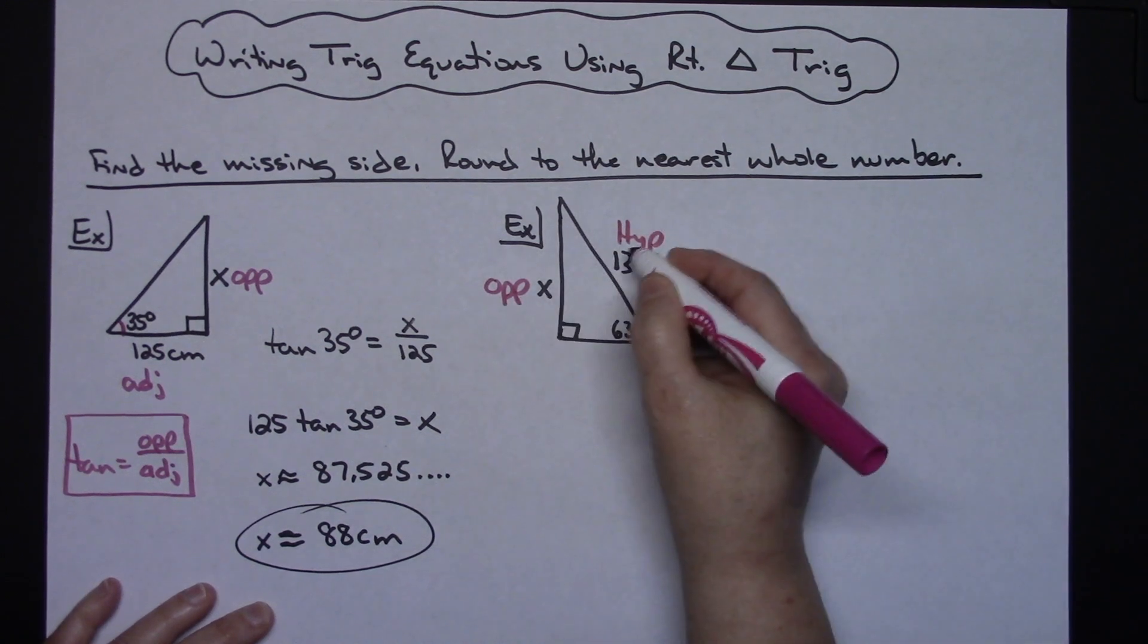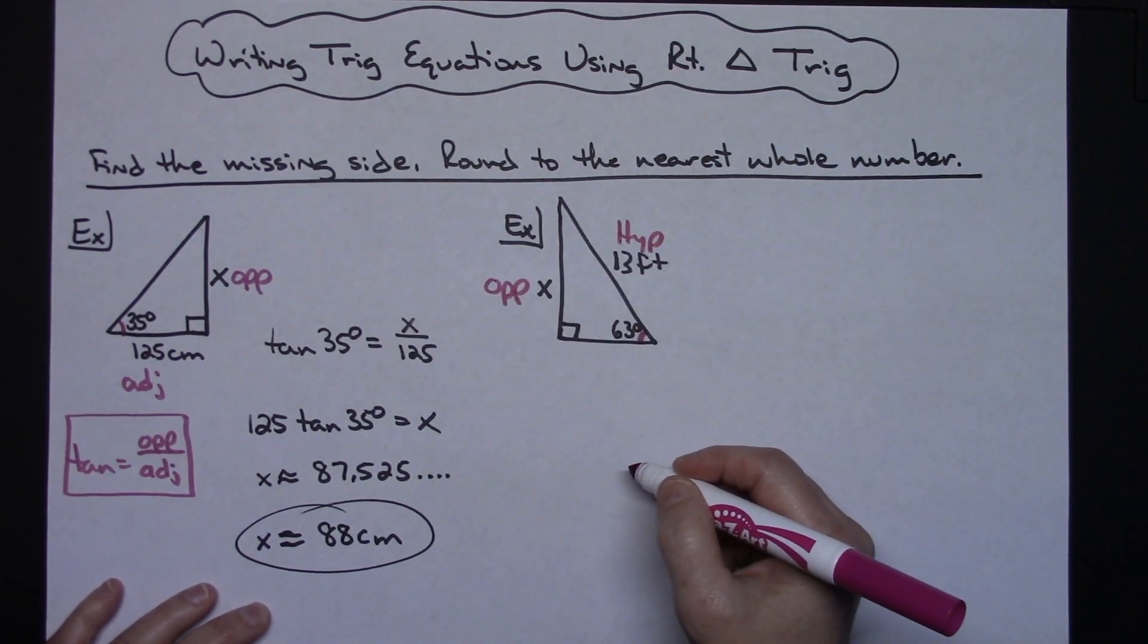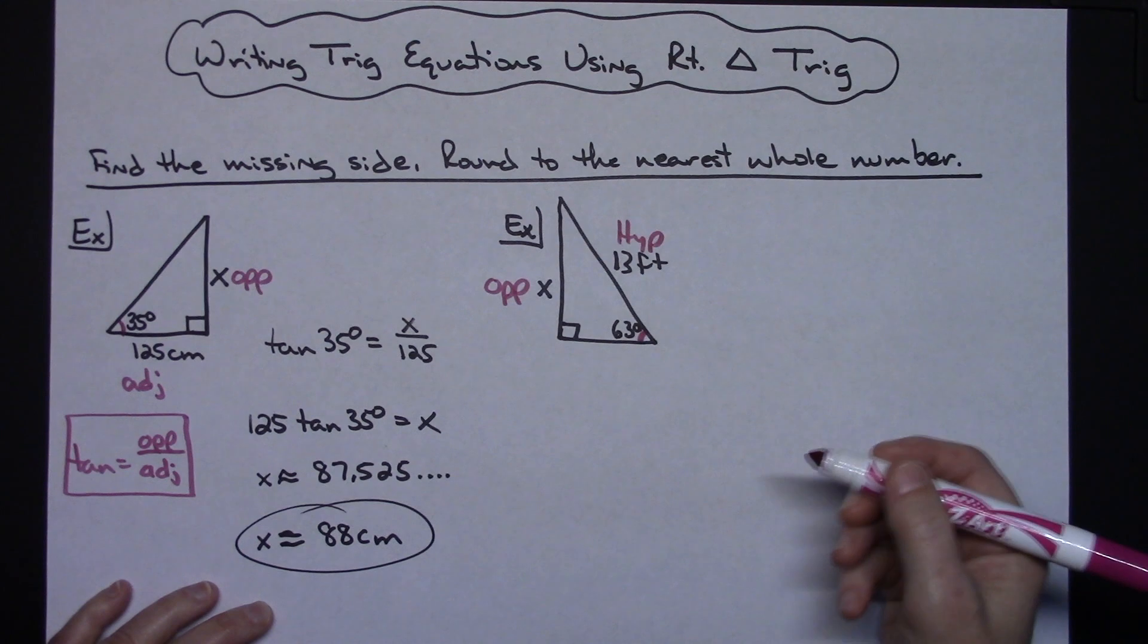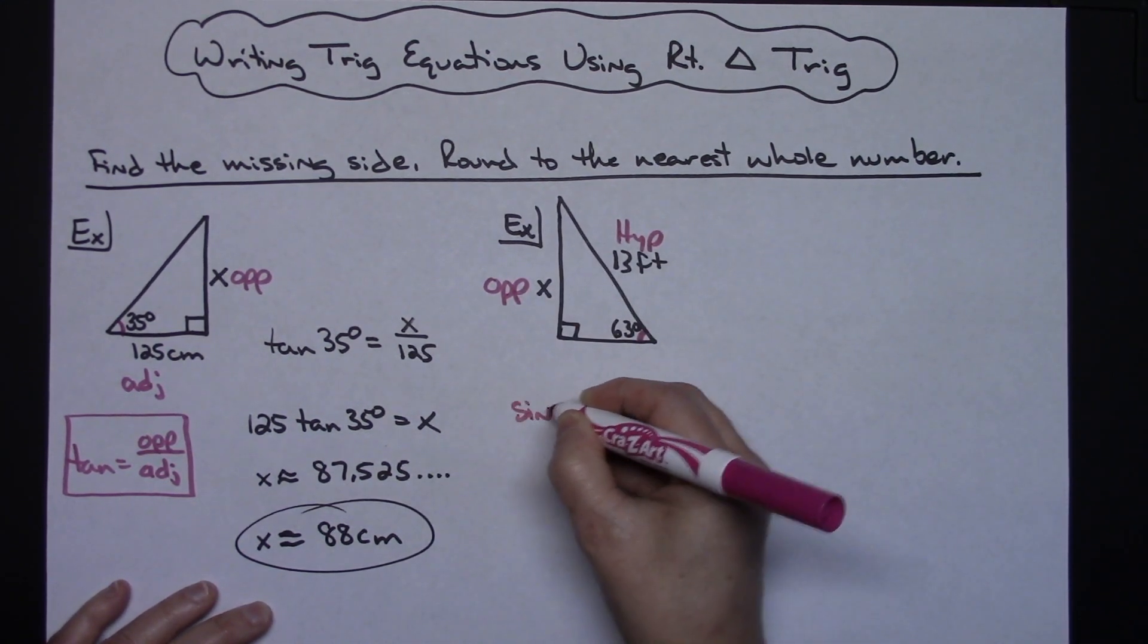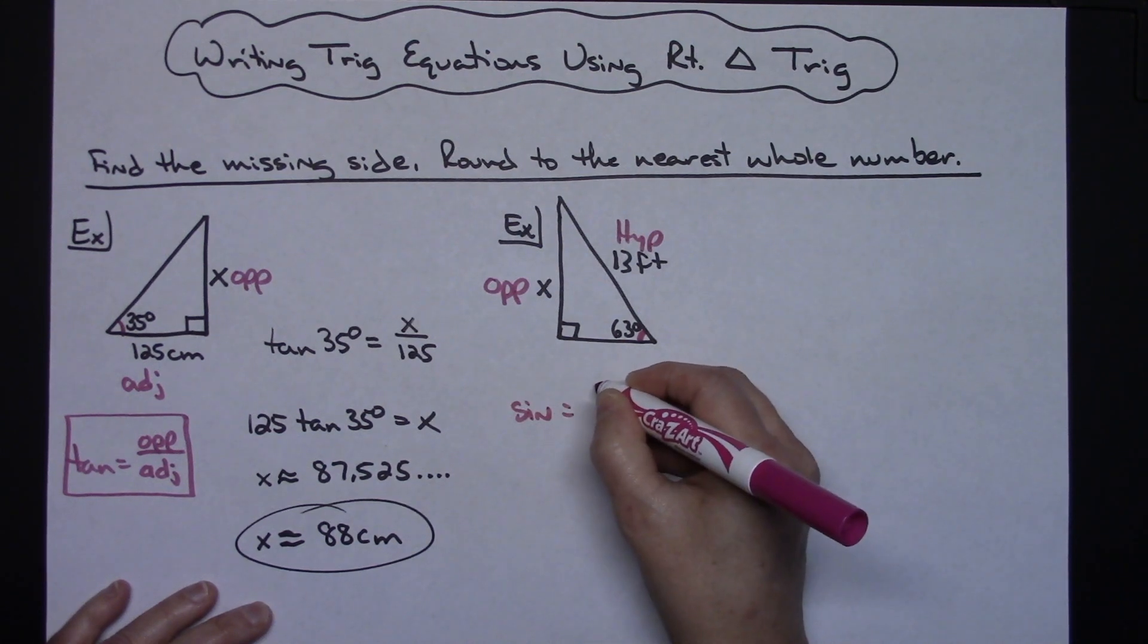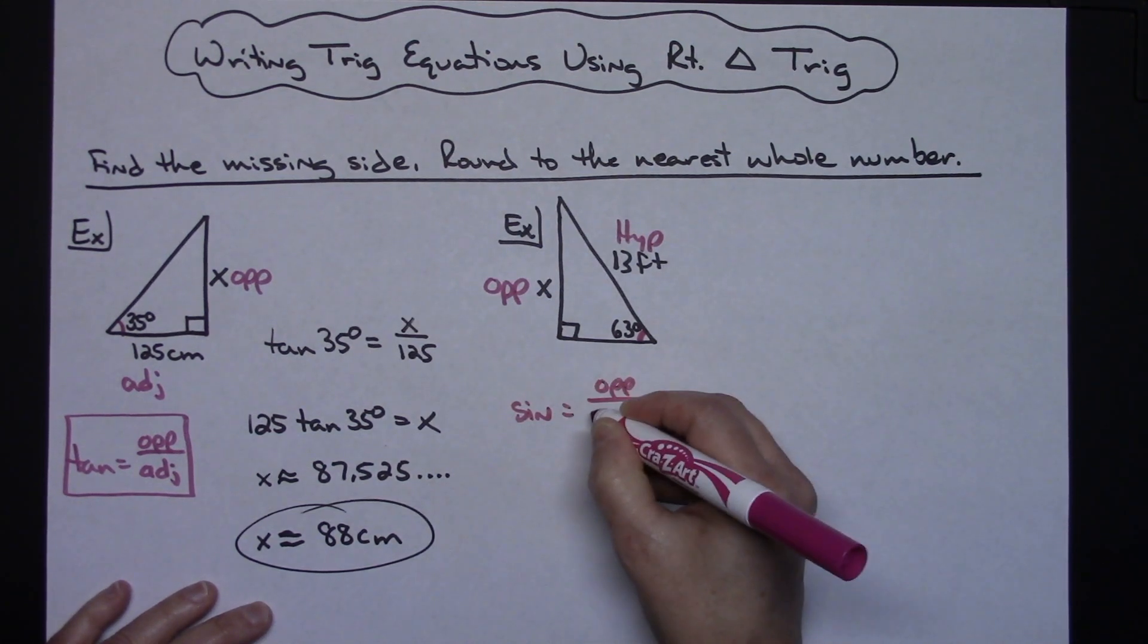Again, you use those two pieces of information to figure out which trig function you need. Opposite over hypotenuse is sine. Hopefully you have that memorized: sine equals opposite over hypotenuse.